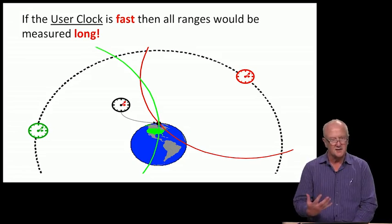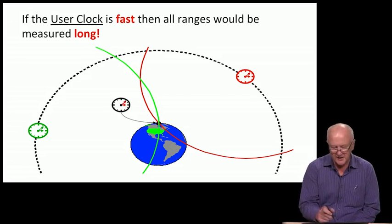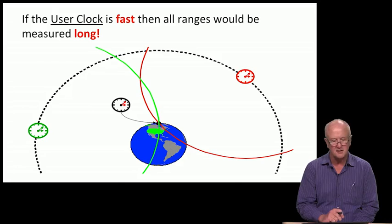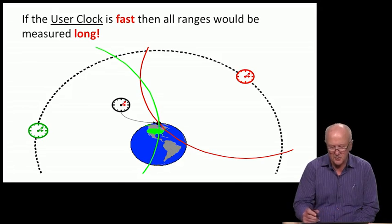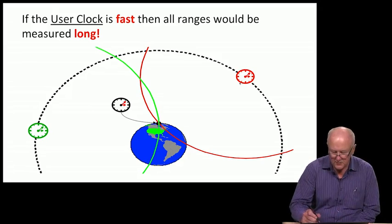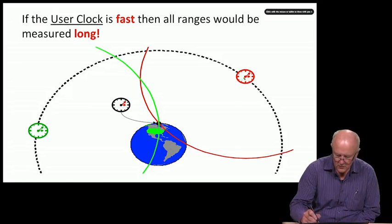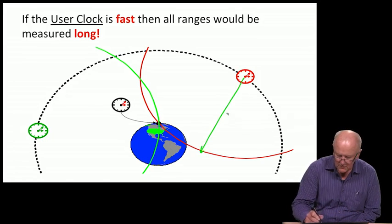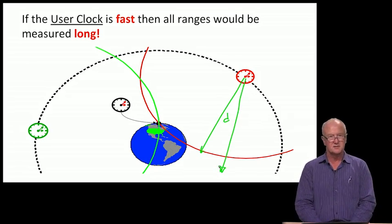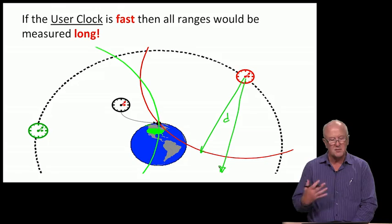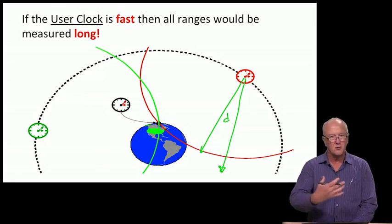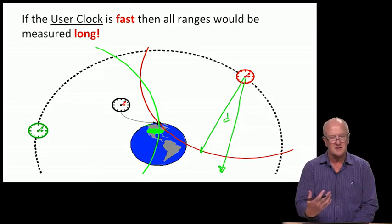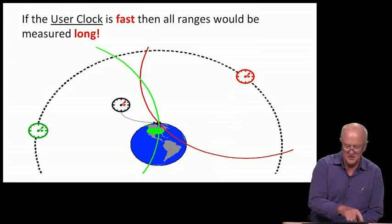That makes us think these ranges are not the nice ones we have here, but are in fact longer. Rather than being associated with d, we would go out to a greater distance because the user clock is fast, reporting 12:01 and 10 seconds rather than 12:01 and 0 seconds.